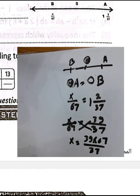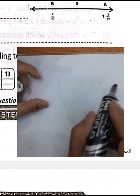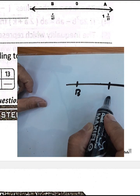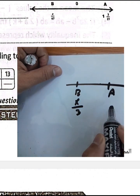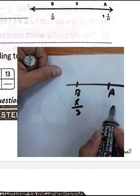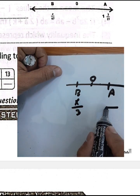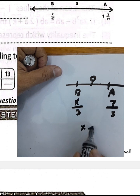If we have x over 3 equals 7 over 3, then x equals 7 — this illustrates solving proportions using cross multiplication.